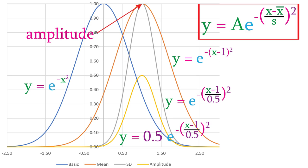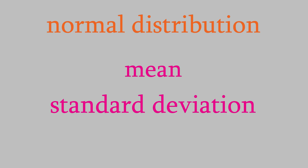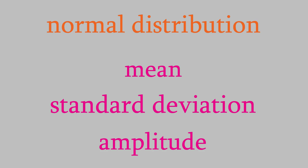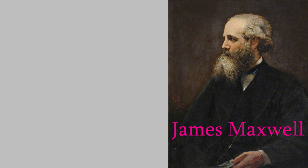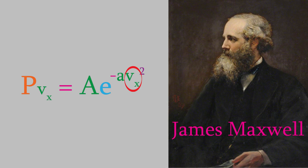So, the three properties of a normal distribution are its mean, its standard deviation, and its amplitude. How do we use this to describe the velocity distribution of the molecules in a gas? Well, one person who was interested in the velocities of molecules was James Clerk Maxwell, the same physicist who worked on the theory of electromagnetism. He guessed that the velocities of molecules would follow a normal distribution, and wrote the equation this way. This gives the distribution of velocities in the x direction, and the function a is related to the standard deviation. The actual velocity distribution that he determined is more complicated than this, but we can still learn some interesting things from this distribution.